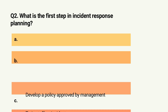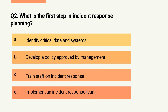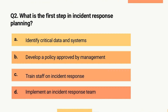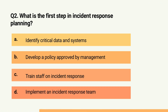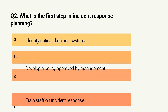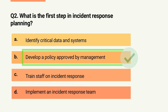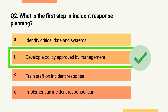Question 2. What is the first step in incident response planning? A. Identify critical data and systems. B. Develop a policy approved by management. C. Train staff on incident response. Or D. Implement an incident response team. The correct answer is B: develop a policy approved by management.